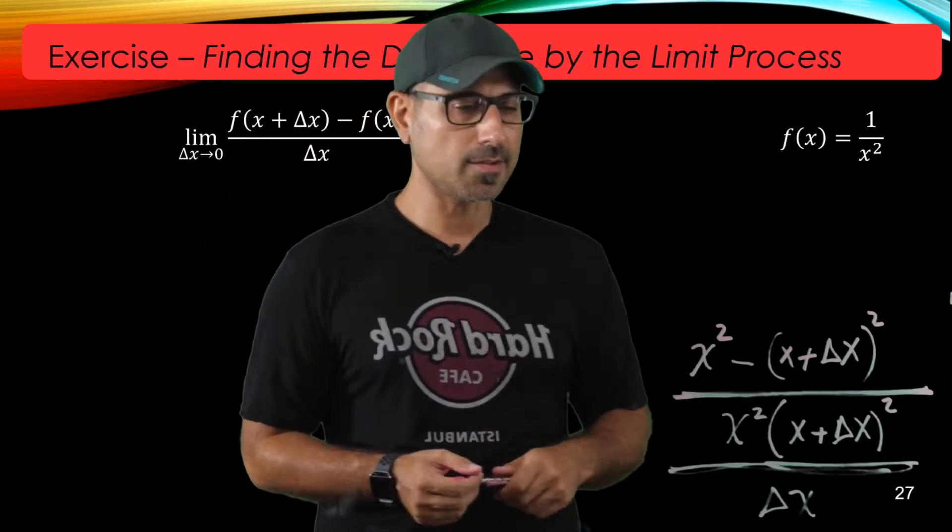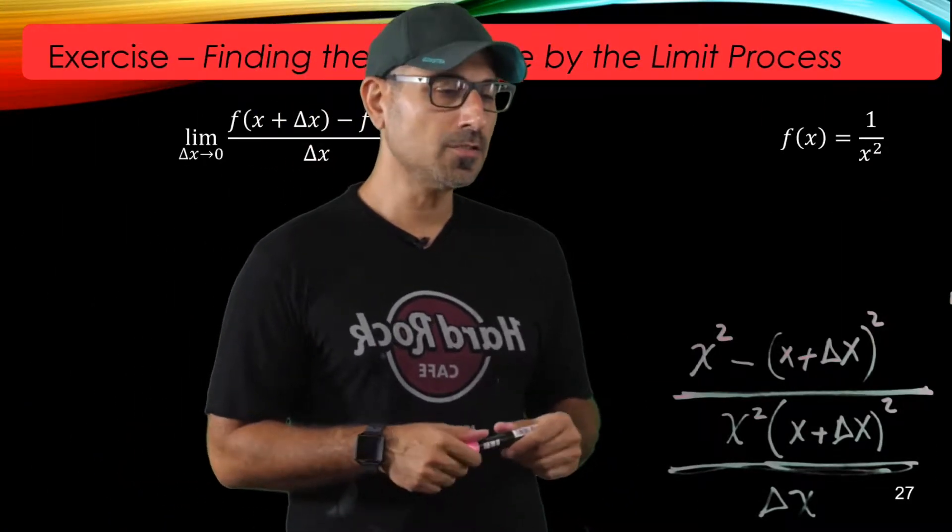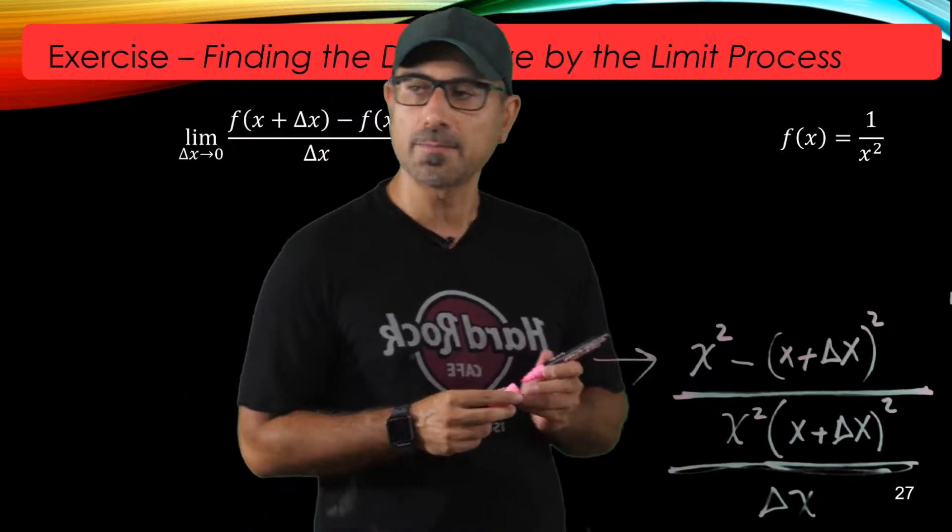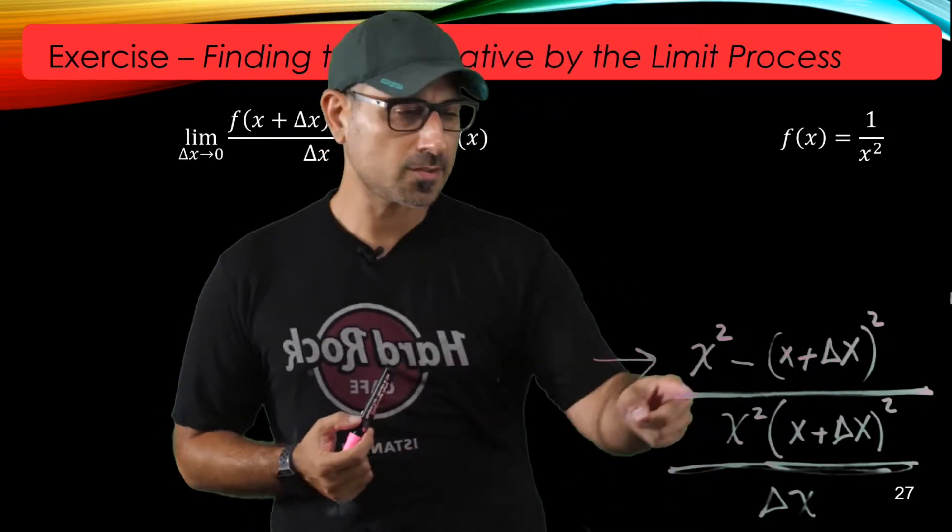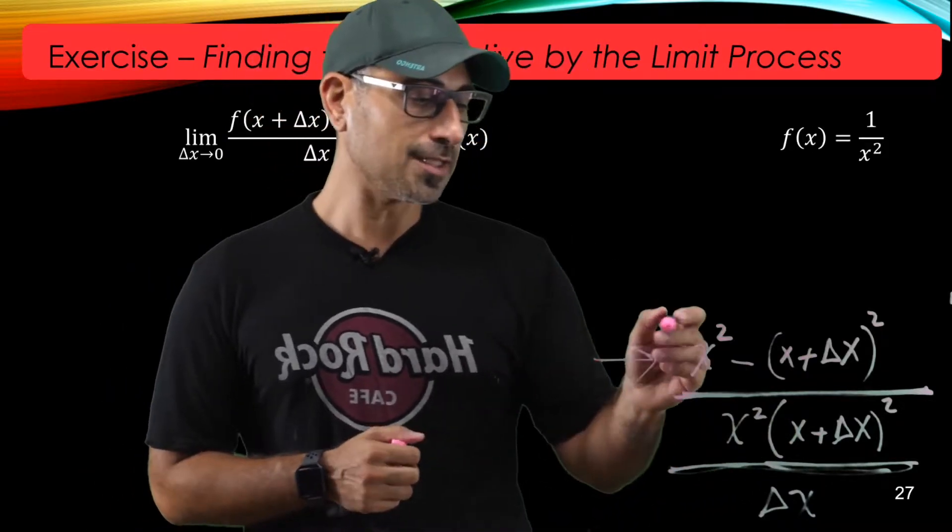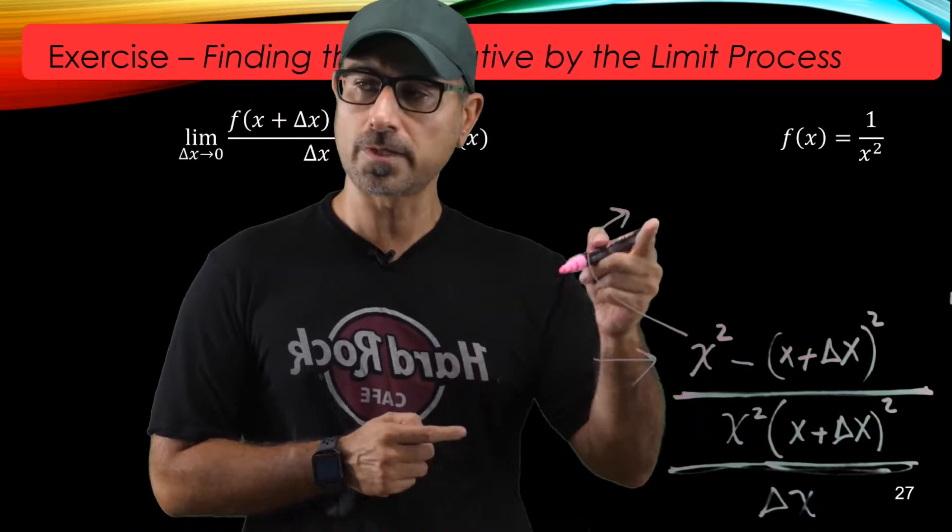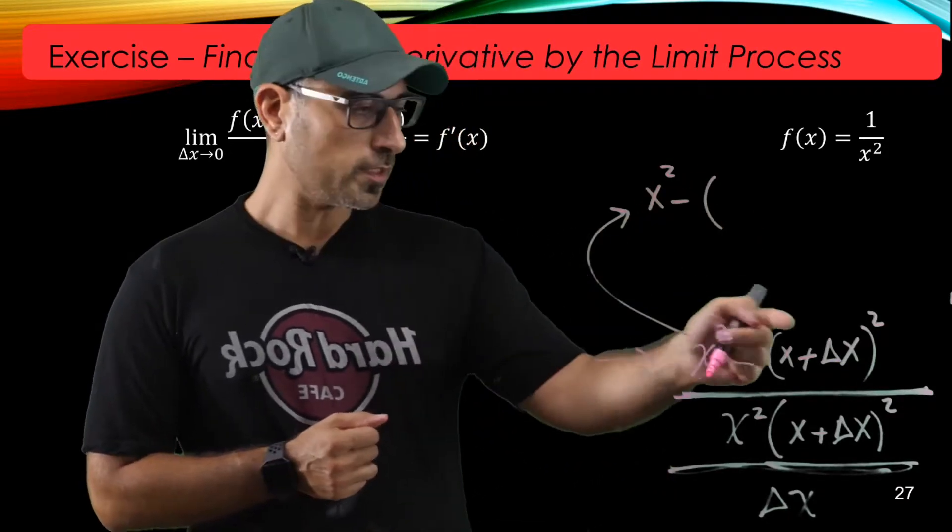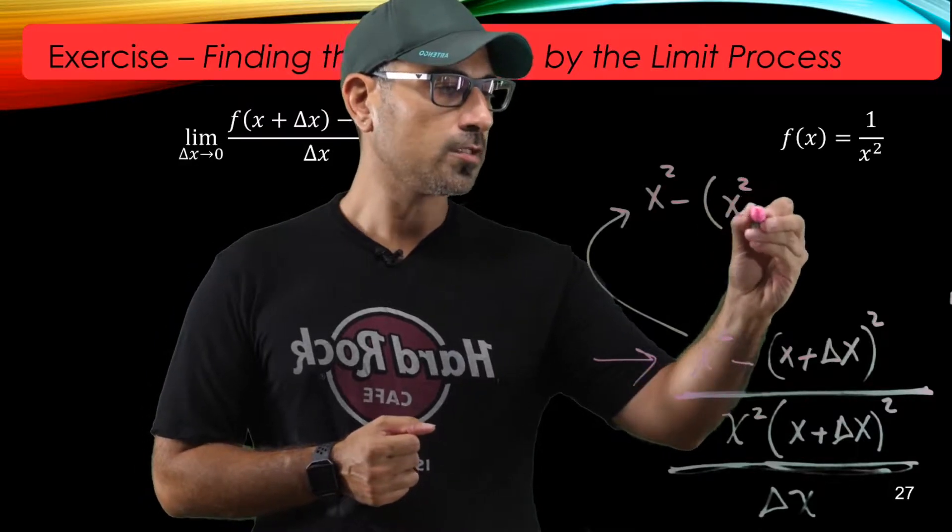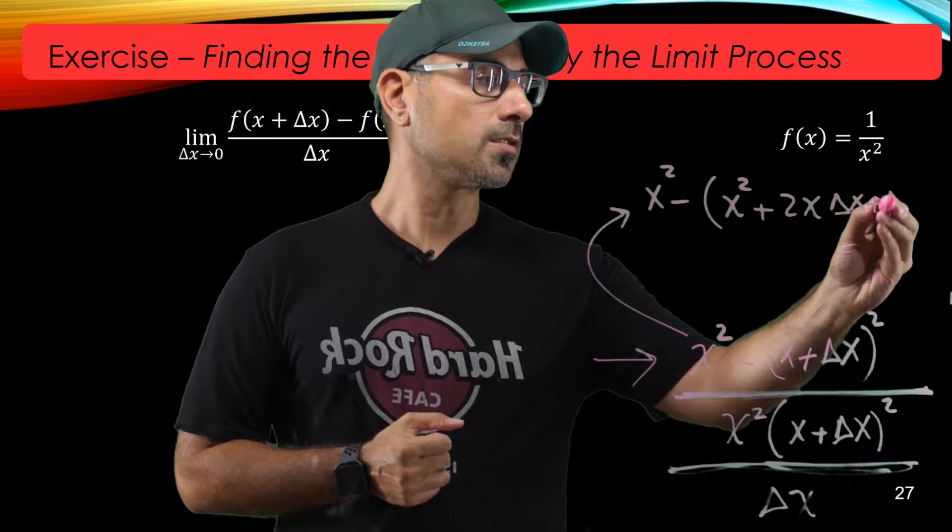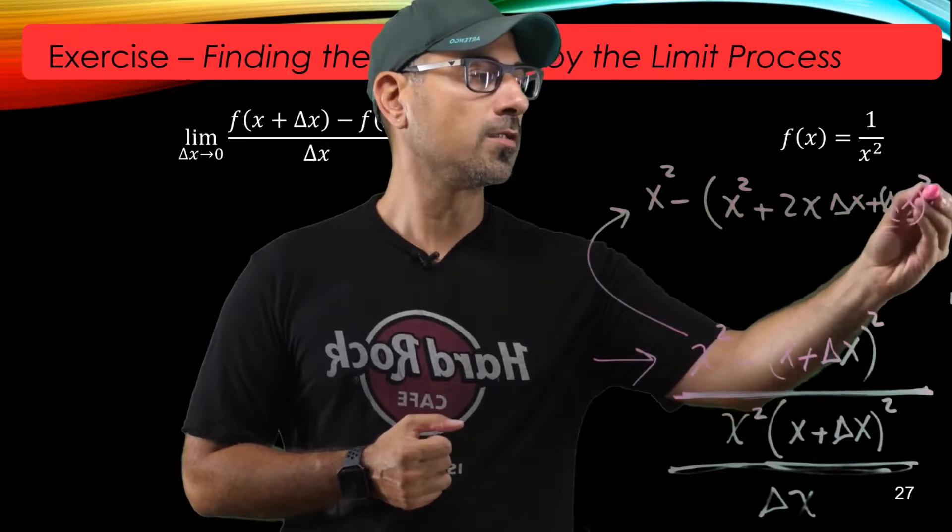Well, let's continue with simplifying this expression. So as you see, the top side here can also be simplified by expanding this square, I mean the quantity square term. So let's just try to simplify the top right here. So x squared minus the quantity square of x plus delta x, that's equal to x squared plus 2x delta x plus delta x quantity squared.